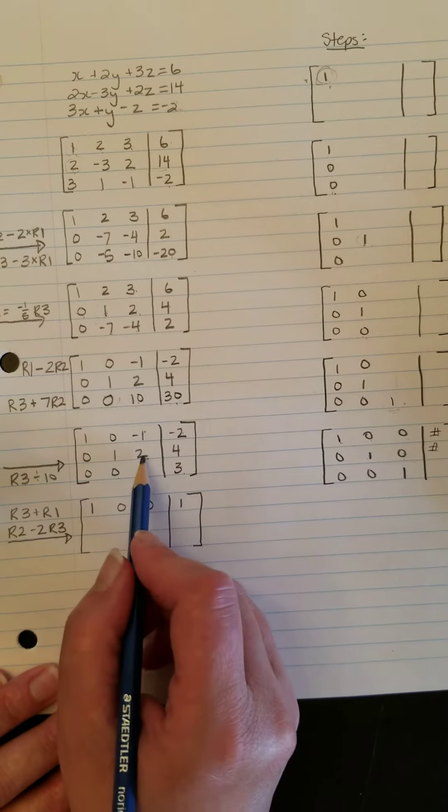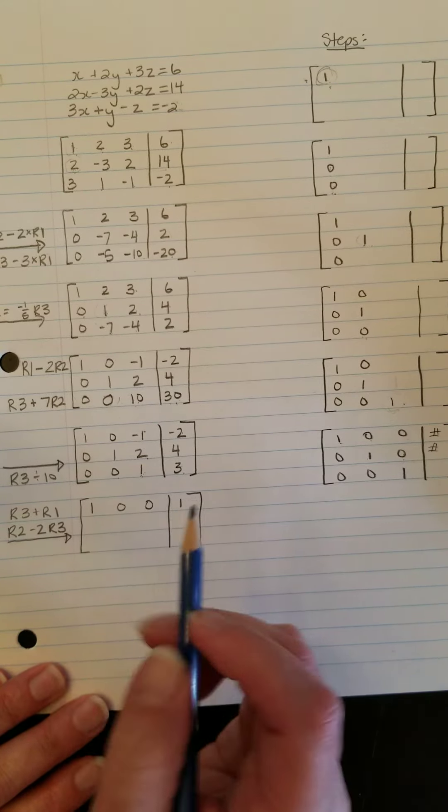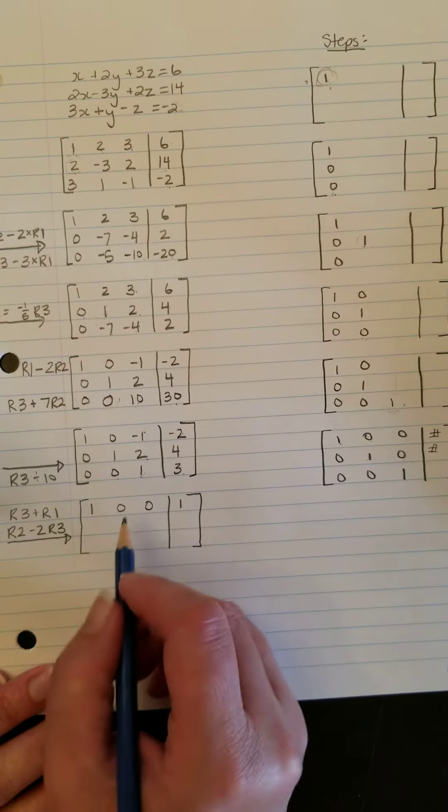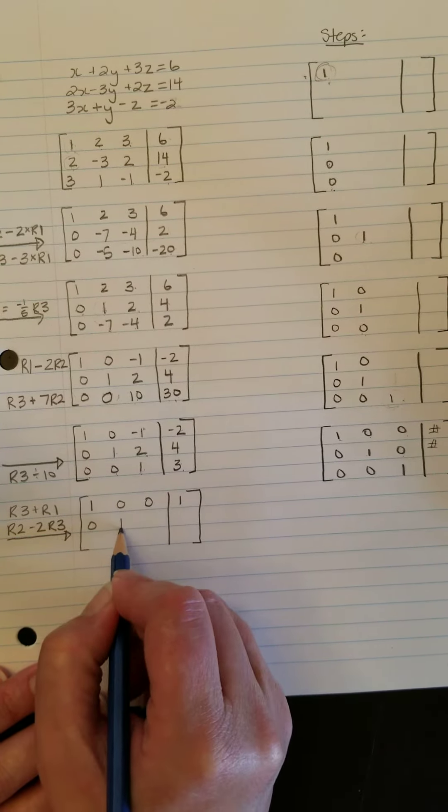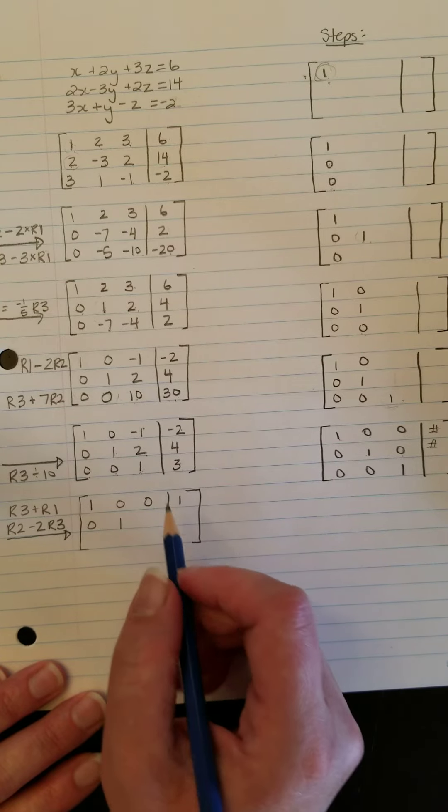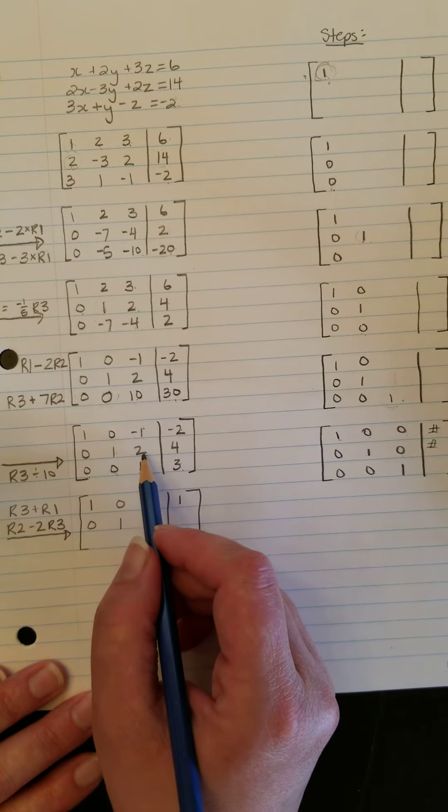We're going to do row 2 minus 2 row 3. And there we will have 0 minus 0 is 0. 1 minus 0 is 1. So you see having those 0s stops this from changing.